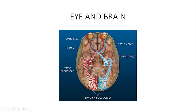The retina contains ganglion cells which come together to form the optic nerve — this is your right optic nerve and that will be your left optic nerve. The left optic nerve and the right optic nerve come together to form the optic chiasma, which gives you three-dimensional vision and depth perception. From the optic chiasma you have the optic tract — this is the left optic tract and this becomes your right optic tract.